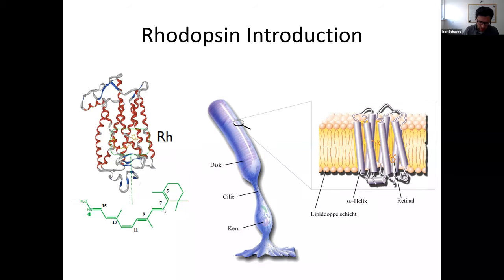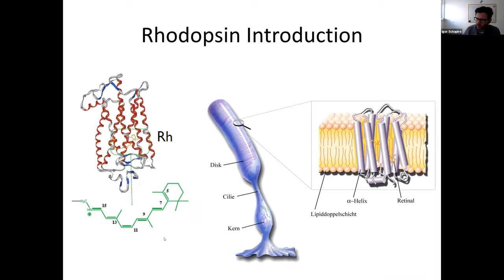In the case of visual rhodopsin, the chromophore is 11-cis retinal, which has six conjugated double bonds. Only the bond between carbon-11 and carbon-12 has the cis configuration. All rhodopsins have in common the retinal chromophore — not always cis, sometimes trans depending on the type of rhodopsin — and this seven-transmembrane protein structure sitting inside the membrane.